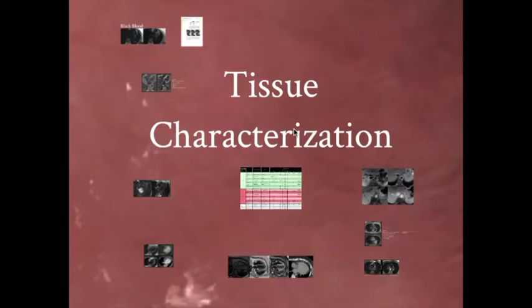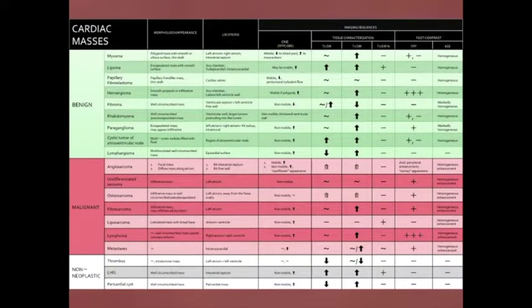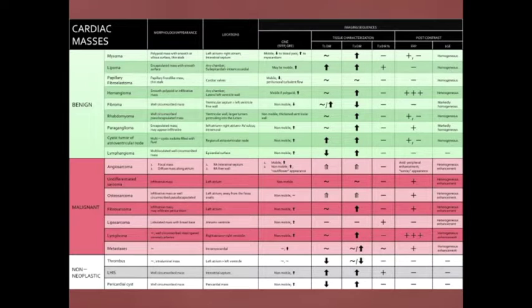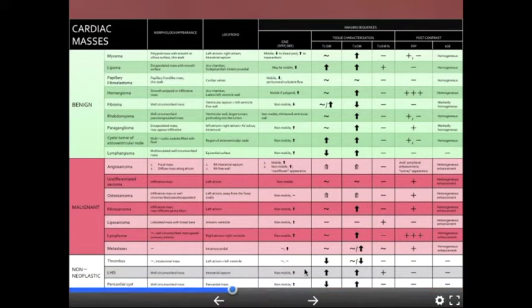Next: tissue characterization, where we use cardiac MRI to identify tissue based on signal properties and pulse sequences. There's a chart showing red for malignant, green for benign, and white for non-neoplastic conditions, describing behavior during CINE, tissue characterization, and with contrast. In order to get good tissue characterization, you either do T1 mapping or T2 mapping — still largely research tools. Clinically, we need to make the blood pool black so it doesn't affect myocardial signal characteristics, and we do that by double inversion recovery.